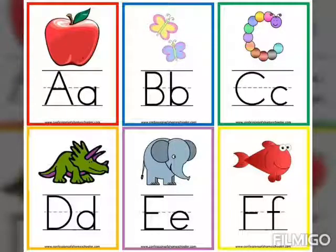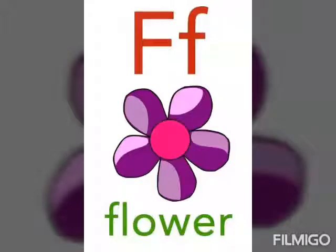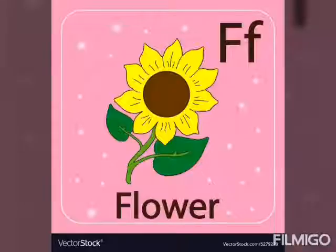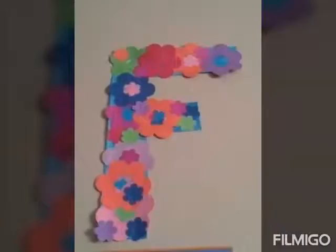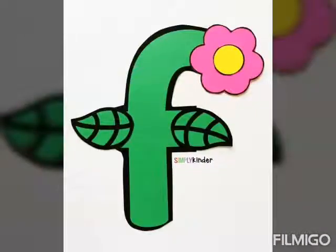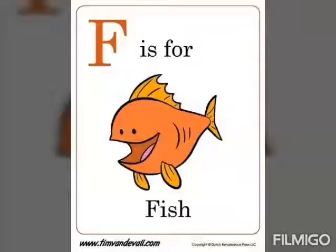F is for flower. Flower starts with F — F-L-O-W-E-R, flower. This is a flower. And this is the small letter f. Small letter f is also for fish.